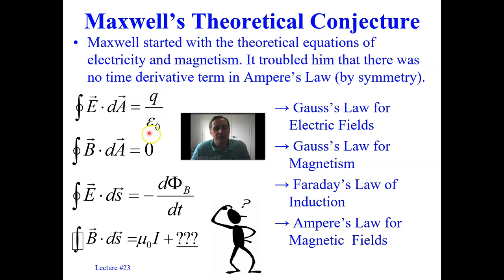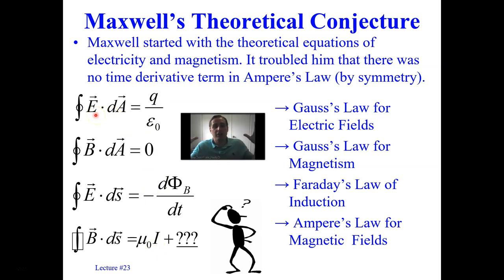Despite the constant source term being in the electric field's equation, there is also a source term in the magnetic field's equation. The magnetic field equation has a source term of electric current — this is Ampere's law. Something steady, in this case enclosed electric current, produces a circulating magnetic field around a closed loop line integral.